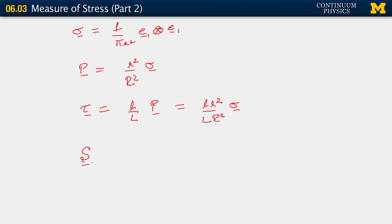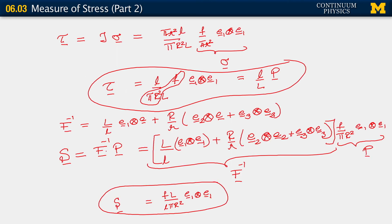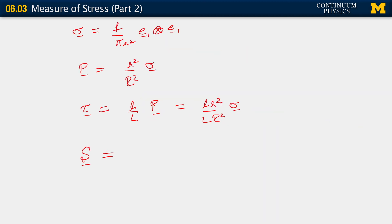And finally, S, we found to be capital L over little l P, which is L R square over l r square sigma. So there you have all the stresses in terms of sigma. So, they're all similar, they're just scaled differently. And this is all because we have uniaxial deformation here. And then it is just the effect of the change in volume. The change in length and radii, which gives us different magnitudes for these stresses. But their orientations are all the same.